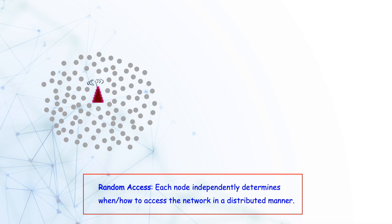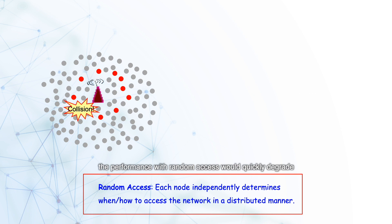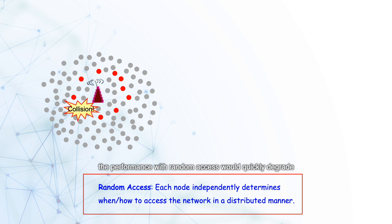For a massive amount of devices with only sporadic transmissions, the access to core networks has to be distributed. Yet, if not properly designed, the performance with random access will quickly degrade with the network size.